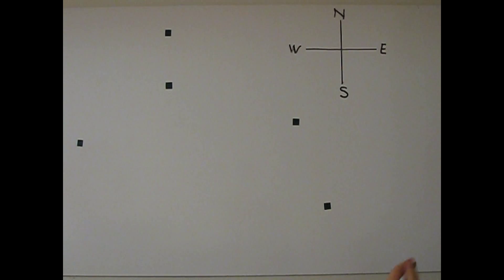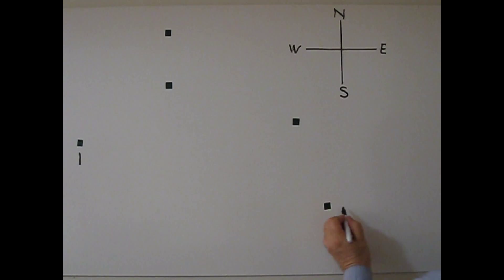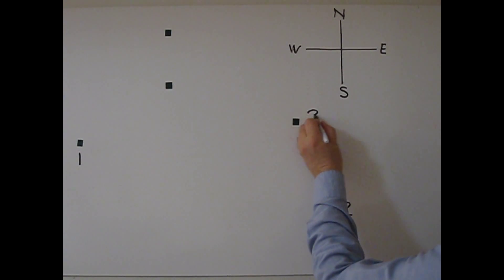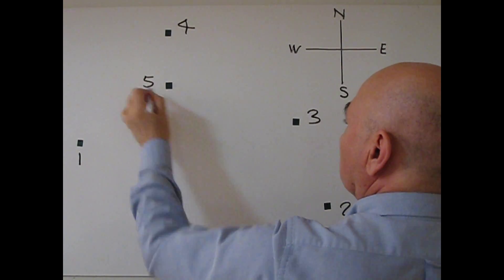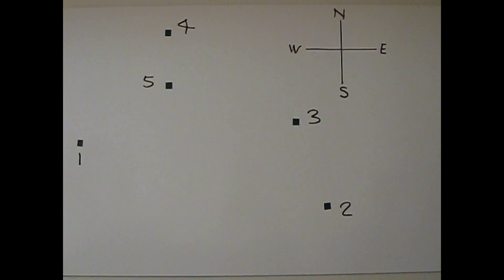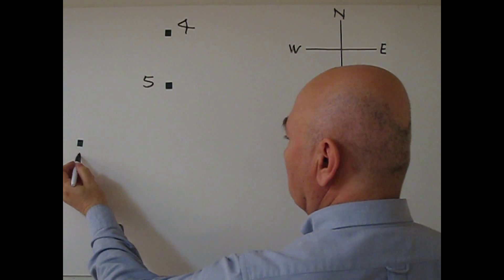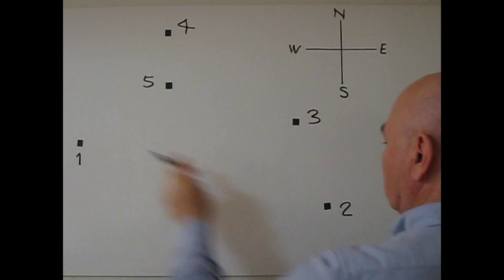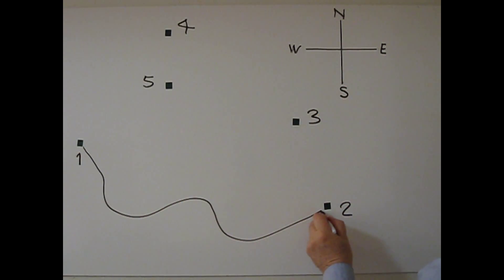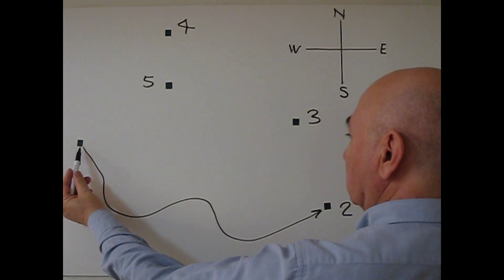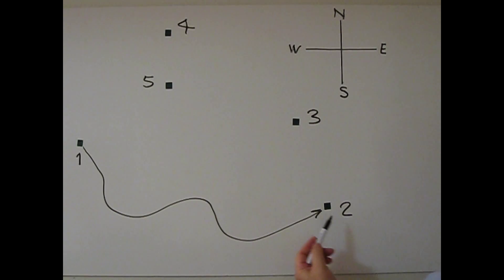There are five locations on the map: location 1, 2, 3, 4, and 5. Let's say I am in location 1 and I want to walk from here to here. This is my initial position and this is my final position.